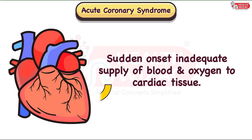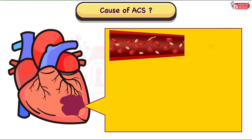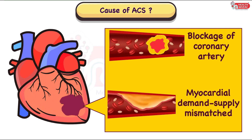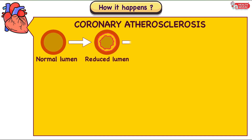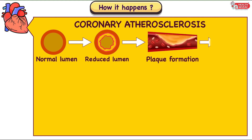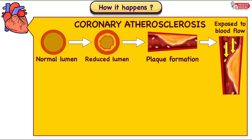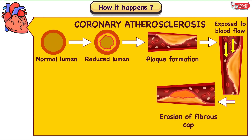ACS or Acute Coronary Syndrome is a clinical condition arising due to sudden onset inadequate supply of blood and oxygen to the cardiac tissue. The major cause of ACS revolves around either blockage of coronary artery or mismatch in the myocardial demand and supply. Coronary atherosclerosis remains the major cause, reducing the inner lumen causing stenosis and leading to hypoperfusion. It triggers plaque formation which is constantly exposed to blood flow, leading to the erosion of the fibrous cap.